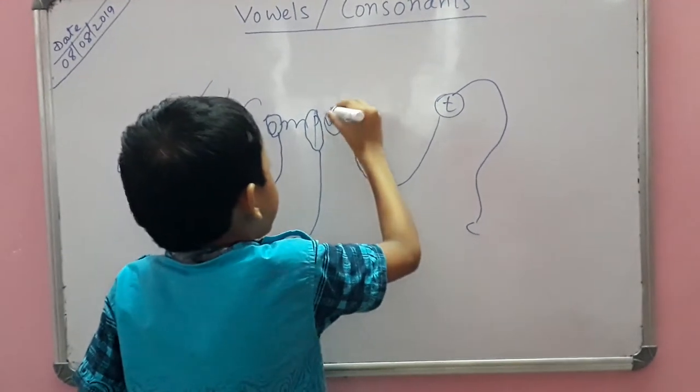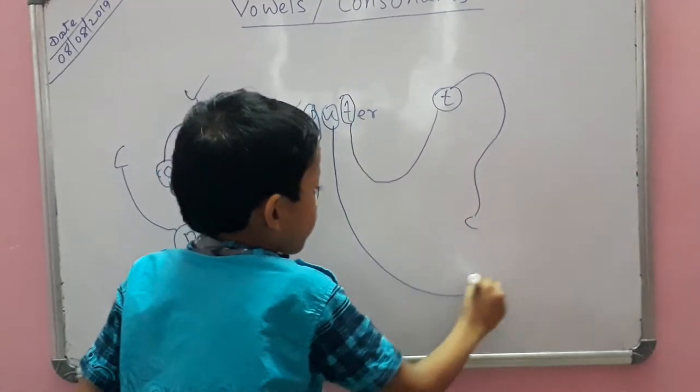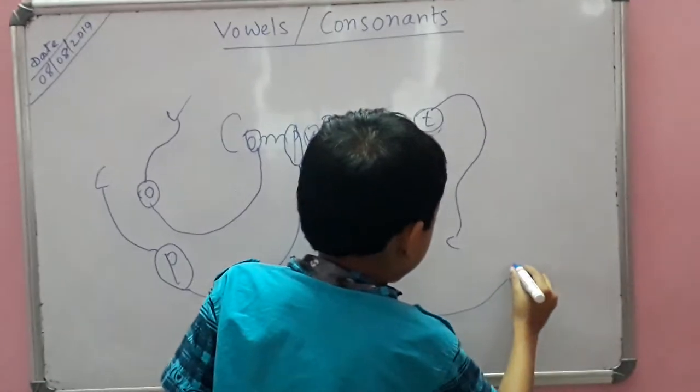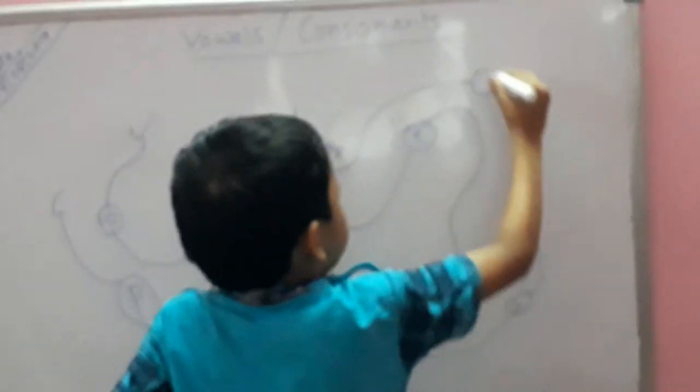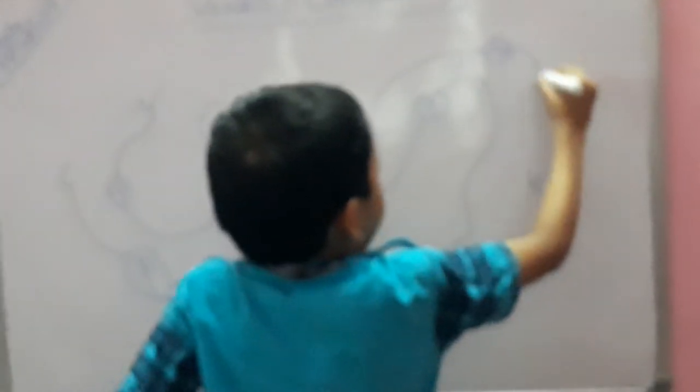Now, U is not a consonant. U is a vowel. U is the vowel. And E is not a consonant. E is a vowel.